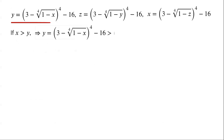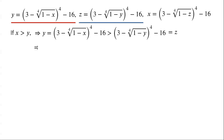If x is greater than y, then y equals (3 minus the fourth root of 1 minus x) all to the power of 4, minus 16, which must be greater than (3 minus the fourth root of 1 minus y) all to the power of 4, minus 16, which equals z. So we have y is greater than z.